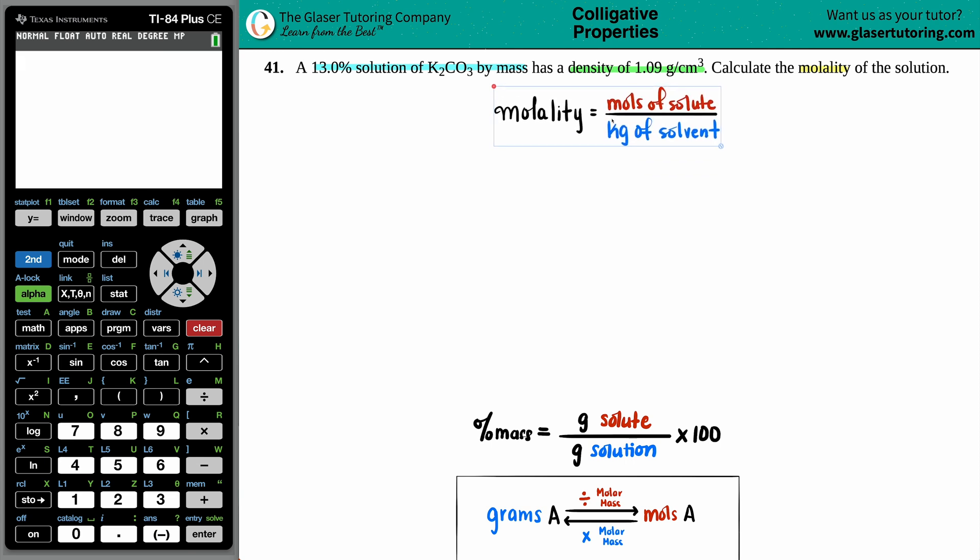Now in order to find the molality, keep in mind that molality is the lowercase italic's M. So whenever you see a lowercase italic's M, that's the molality. Don't get that confused with the capital M, which is molarity.